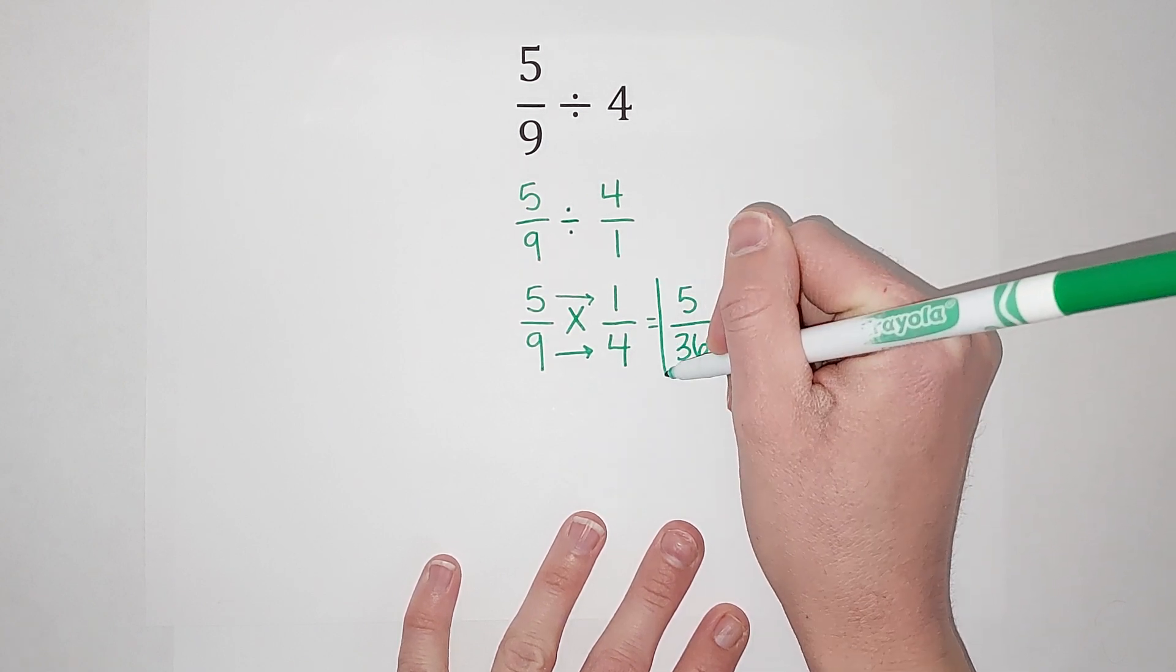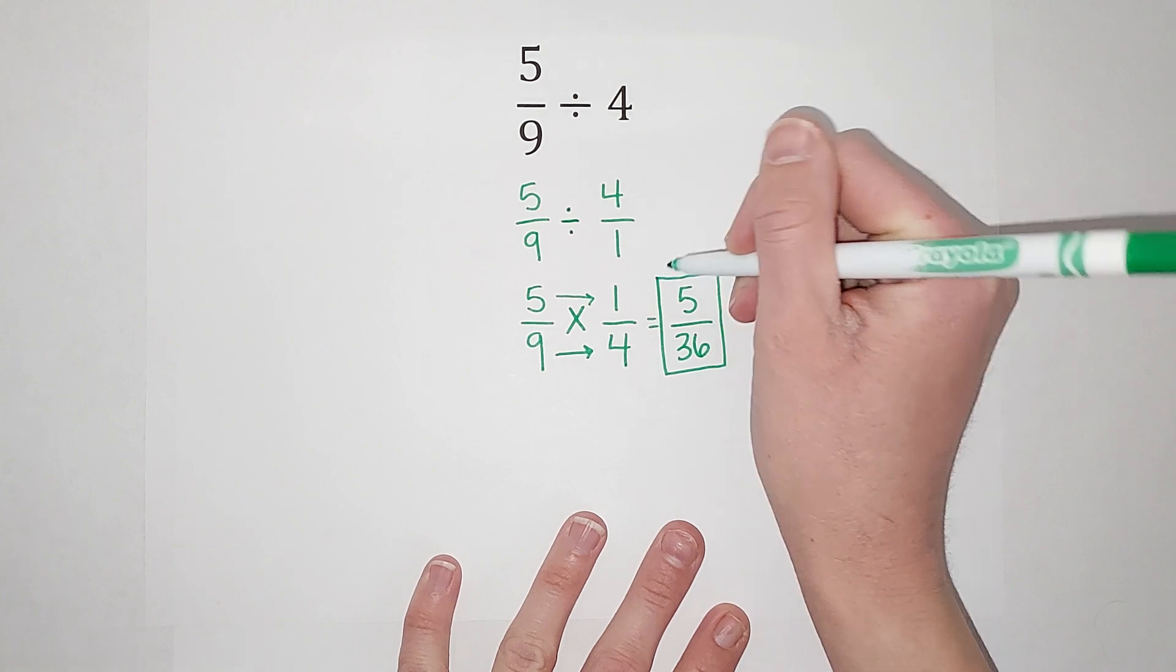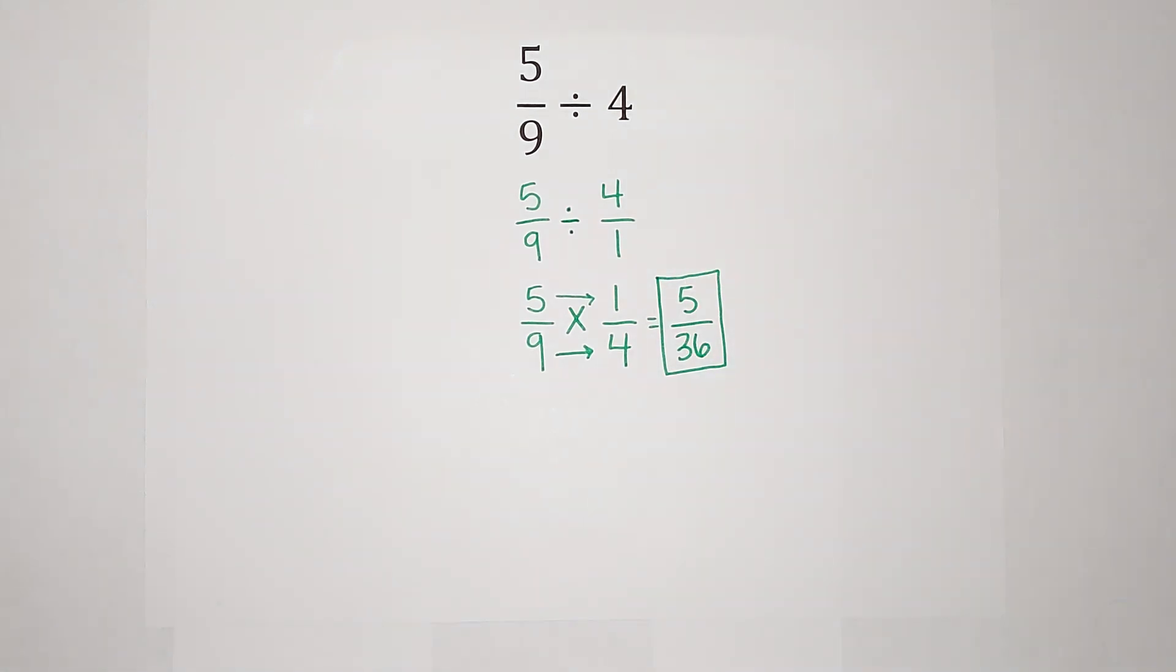And guess what? Check to see if it simplifies always with fractions, but this one doesn't. So that is my answer. Five ninths divided by four is five thirty-sixths.